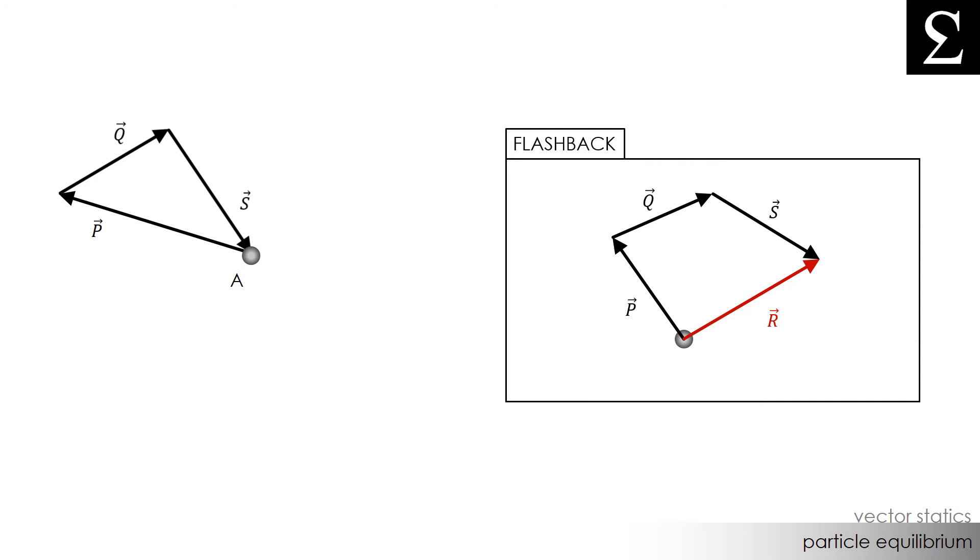In our case now, we have no resultant vector or resultant force since all the vectors P, Q, and S all make their way back to the particle. In other words, the resultant force acting on this particle is zero. Since the resultant force acting on our particle is zero, this must mean that all the forces acting on this particle must summate to zero.